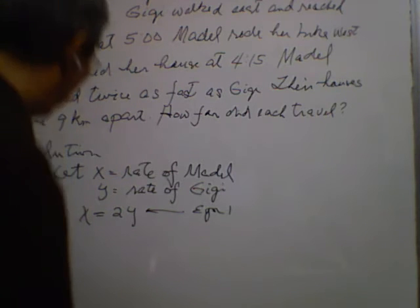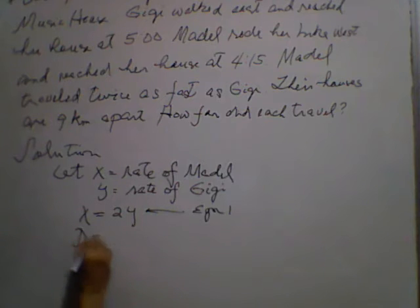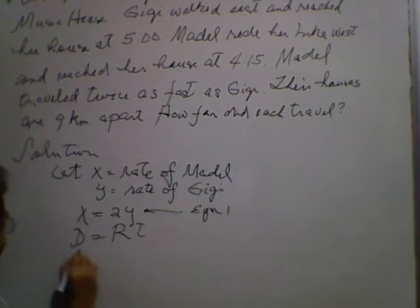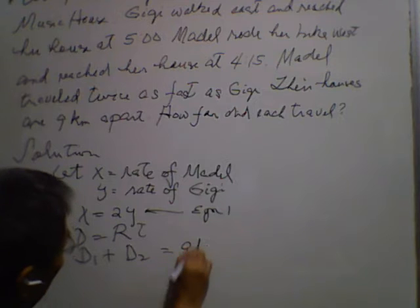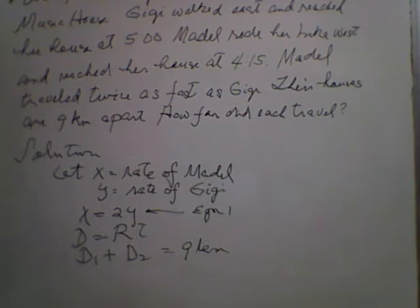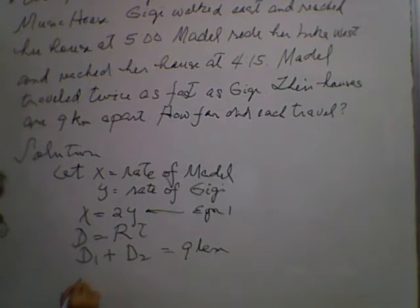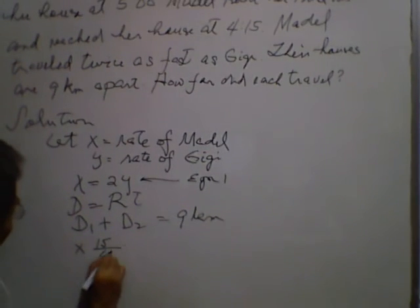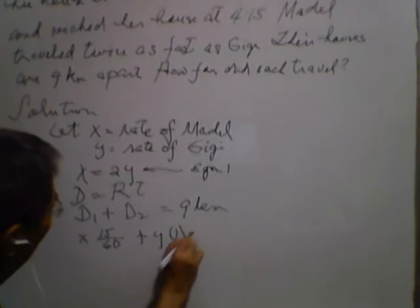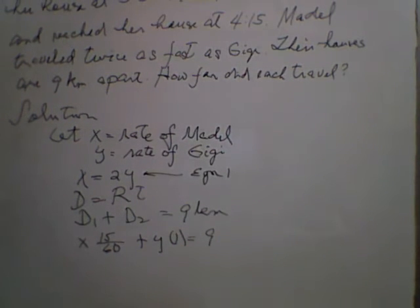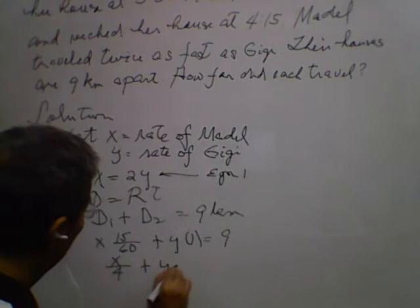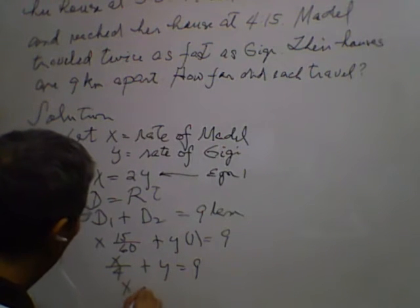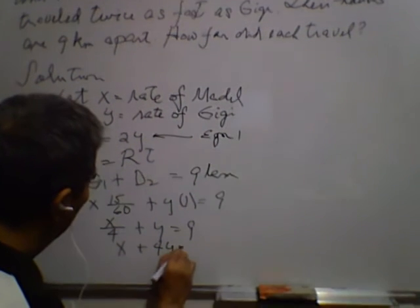Next, we know that distance D is equal to rate times time (D = RT). So D1 plus D2 — the distance of Madel and the distance of Gigi — should equal 9 kilometers. D1 is the rate of Madel, which is X times 15/60, plus Y times 1, and that equals 9. Simplifying, X over 4 plus Y equals 9, which gives us X plus 4Y equals 36.